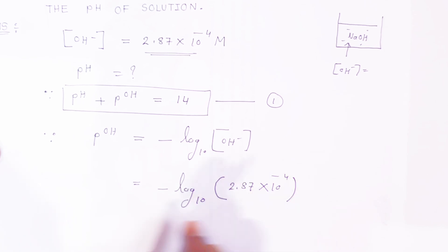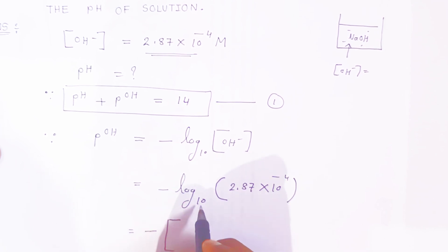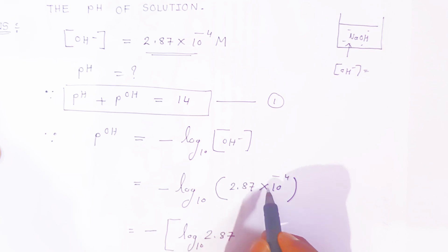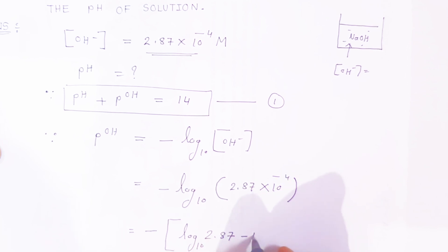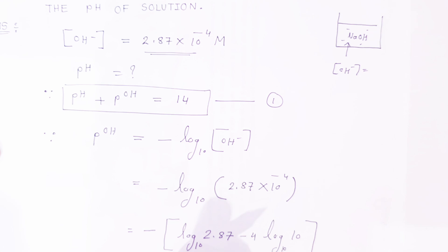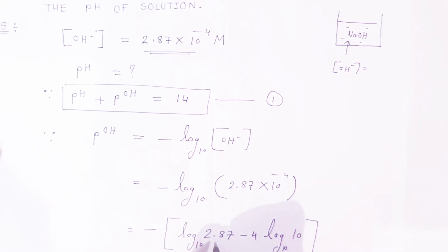Now what happens — when log will go inside, putting the minus outside. Log base 10 will go inside, so it will become: log base 10 of 2.87 plus log base 10 of 10 raise to minus 4. Because of multiplication, minus 4 will come down and log base 10 of 10 will be always 1. This is a very important step.